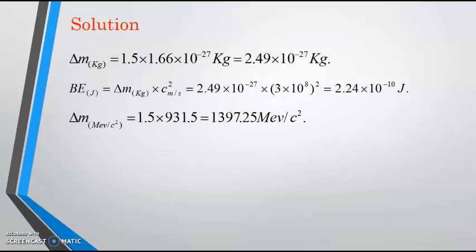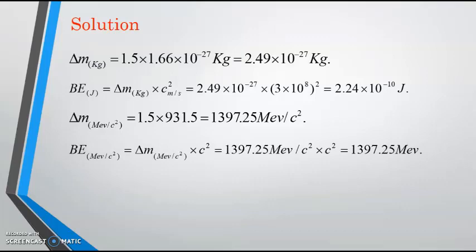Now we're going to find energy in mega electron volt. We're going to convert the mass defect from U to mega electron volt per C square. Each 1U equals 931.5 mega electron volt per C square. We multiply delta M in MeV per C square by C square. C square and C square can reduce, so it will be 1397.25 mega electron volts.